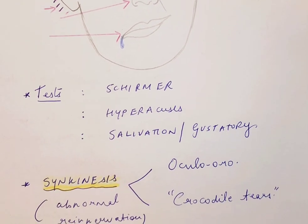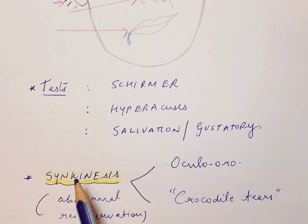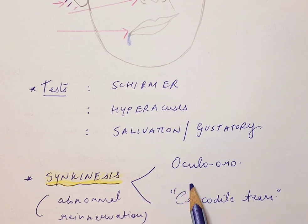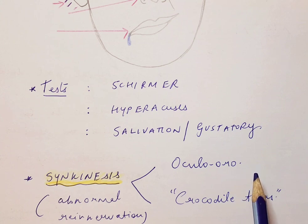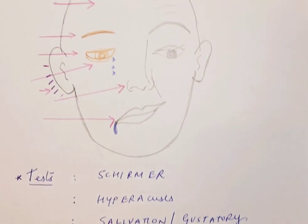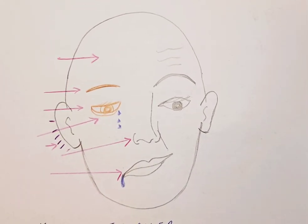Synkinesis refers to the simultaneous movement of two different functions due to abnormal re-innervation during the recovery phase of facial nerve palsy. Along with voluntary movement, an involuntary function also occurs because of haphazard wiring as the nerve regenerates. For example, with chewing there is inadvertent blinking of the eye on the affected side — known as oculo-auricular synkinesis — and what is popularly known as crocodile tears, where eating stimulates salivation and simultaneously triggers lacrimation, causing tearing from the eyes. These are the most common features of facial nerve palsy, and upcoming lectures will address management.